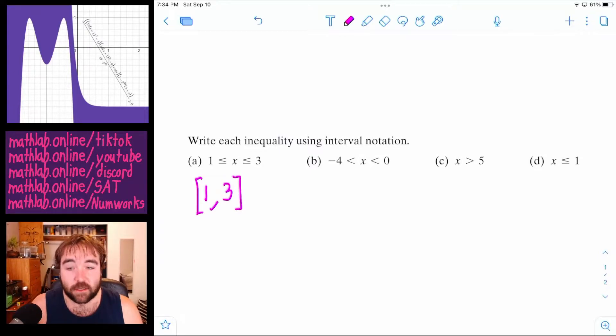So see here that x is allowed to be equal to one. So that's why we put a bracket on the one, because the bracket shows that it is allowed to be that number.